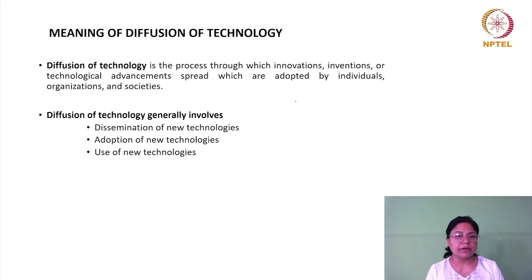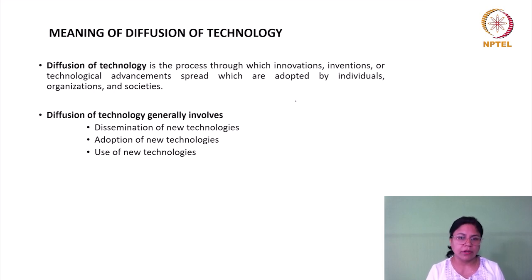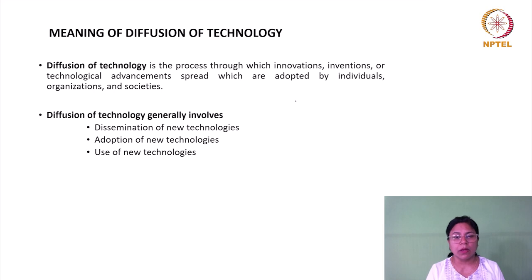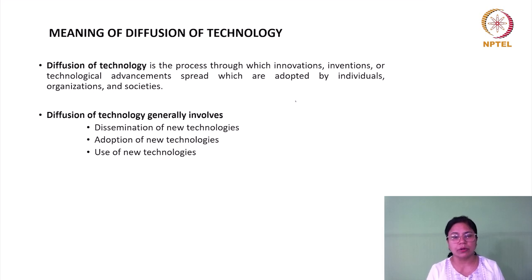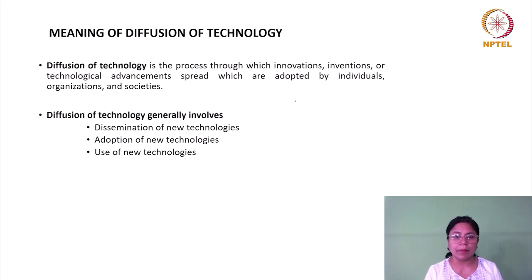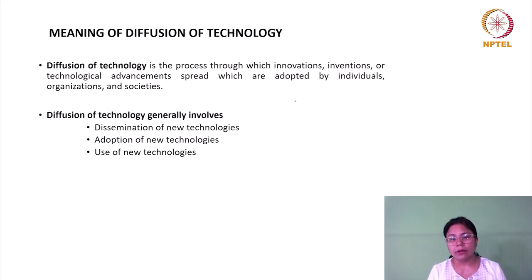When we talk about diffusion, if you look at the definition, it is essentially the process through which innovations, inventions or technological advancements spread and need to be adopted by individuals, organizations and societies. There are three major aspects to this diffusion. First, dissemination of the new technology. If you are talking about introduction of desktop, they are now widely available in most offices whether government or private. They are being used for the different types of work that need to be done. The technology needs to be disseminated and also adopted — apart from doing work with paper and pen, now we are using these new technologies to do the work.